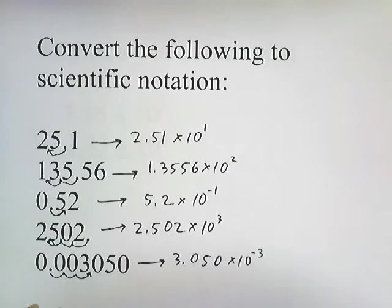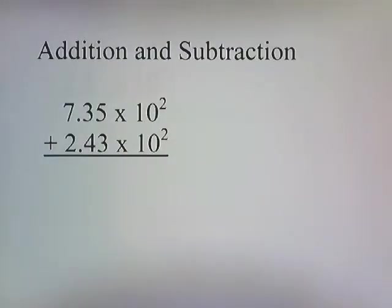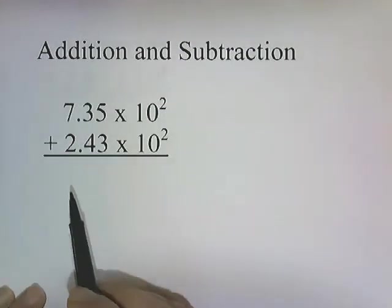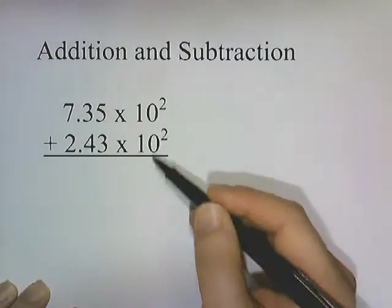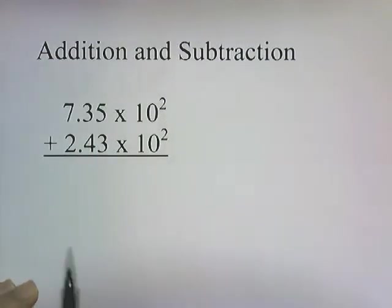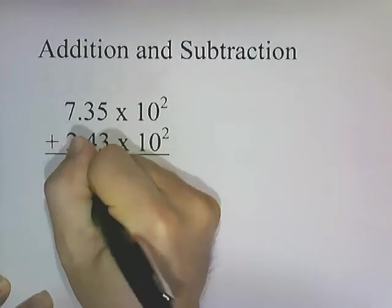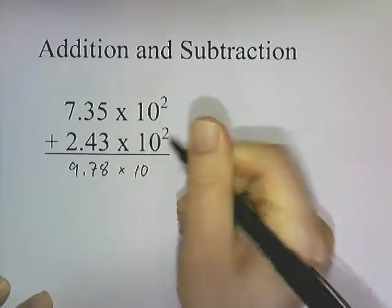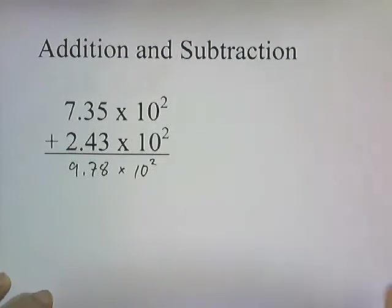Negative because we moved it to the right, 3 spaces over. Let's do some addition and subtraction with scientific notation. When you add numbers in scientific notation, you just go ahead and add them regularly if they're the same power. These are both at the power of 2, so 7.35 plus 2.43 gives me 9.78 times 10 to the 2. These don't change.